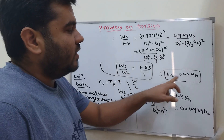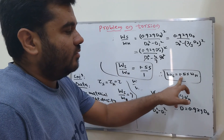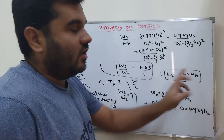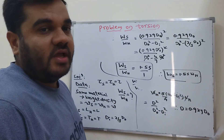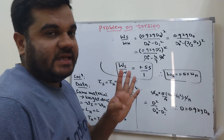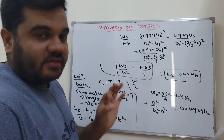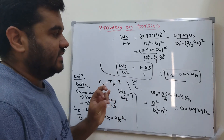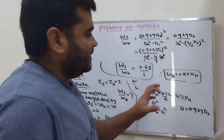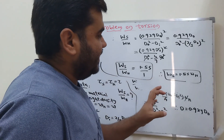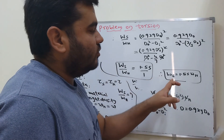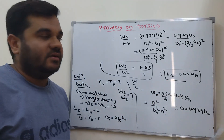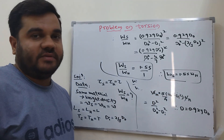So the solid shaft is approximately one and a half times the weight of the hollow shaft. If the material is the same, length is the same, torque is the same, and shear stress is the same, we get that the weight of the solid shaft is 1.55 times the weight of the hollow shaft. This is the comparison between the weights of the two shafts.